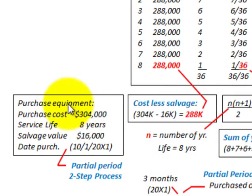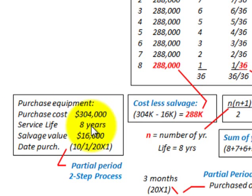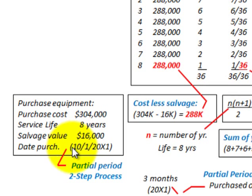We have a purchase of equipment with a purchase cost of $304,000, a service life of 8 years, and a salvage value of $16,000 at the end of the 8 years. The date of purchase is going to be on October 1st of year 20X1.